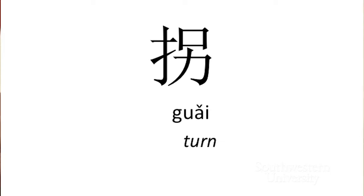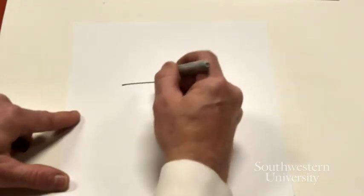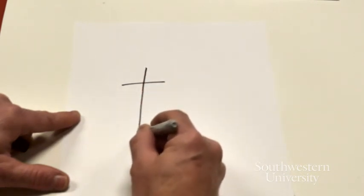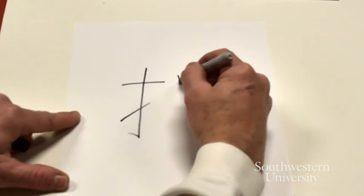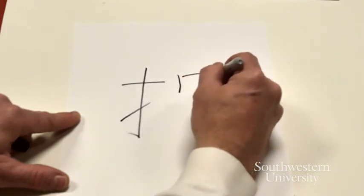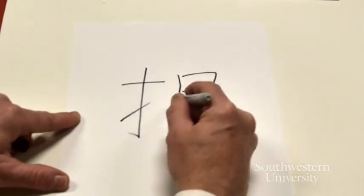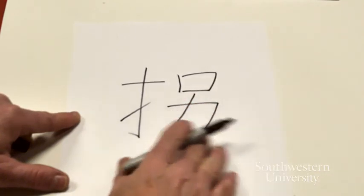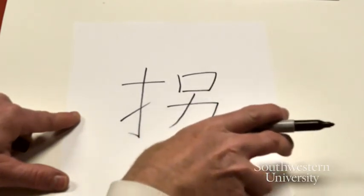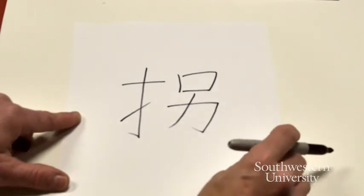Guai, to turn. Turn. So we have the hand radical again. Heng, shu, go, ti. And then this component we've seen in bieh. A mouse on top of li, strength. In this case, it's just phonetic. Guai.